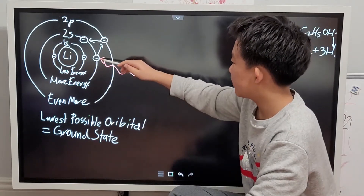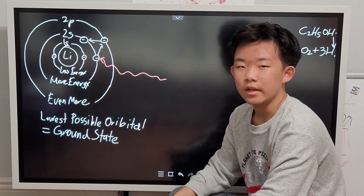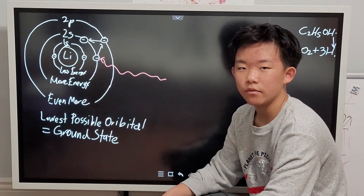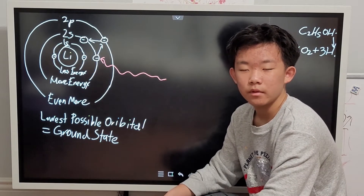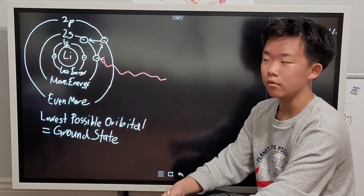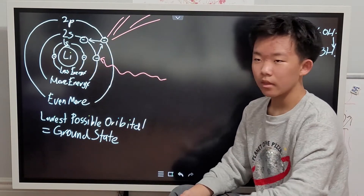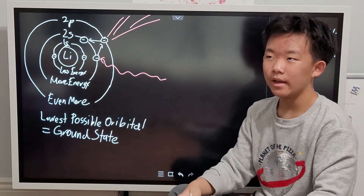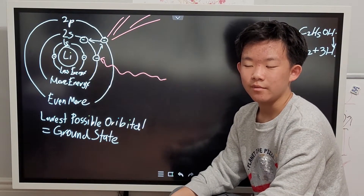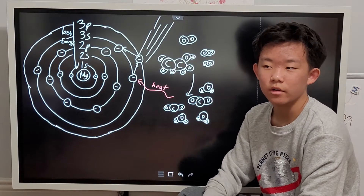Because the electron moves to a higher orbital, it will have more energy than it once had. However, the electron isn't exactly comfortable with this new orbital, so it'll have to give away energy to go back to its old one. To do that, it releases it all as light, then the electron goes back to the original orbital and just repeats the process.